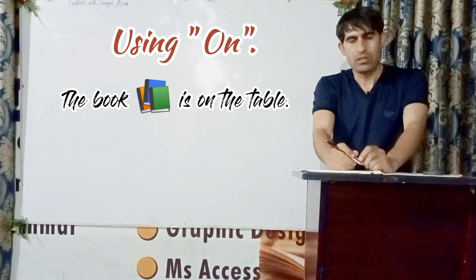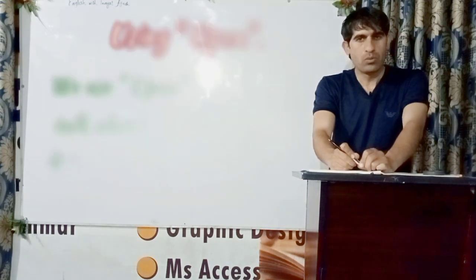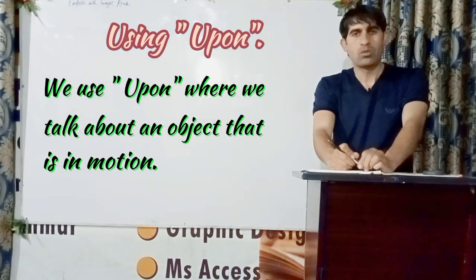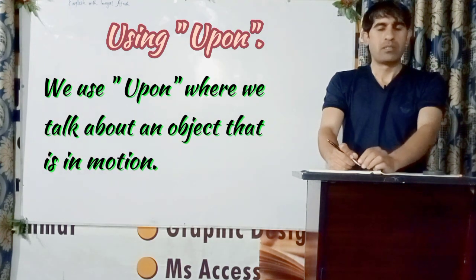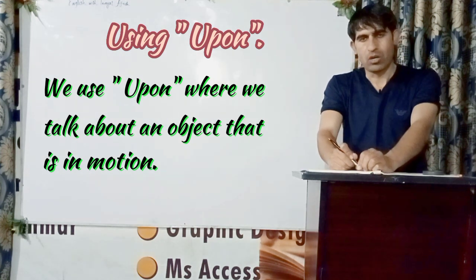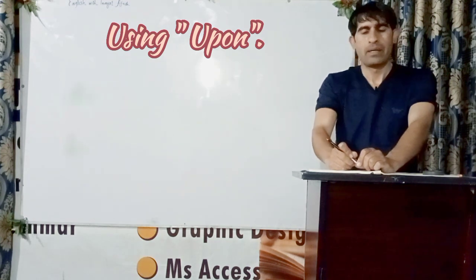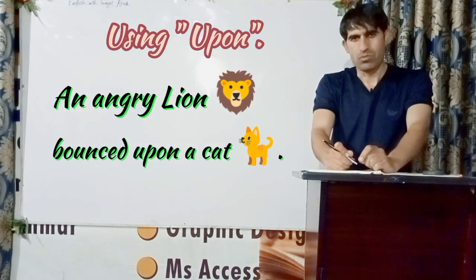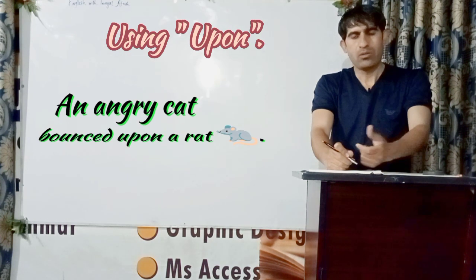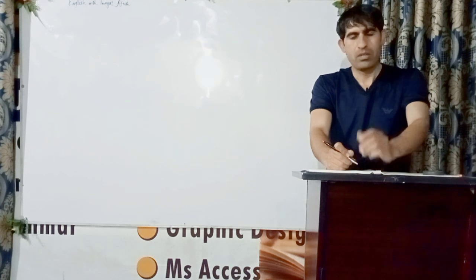The story about using 'upon' is quite different. 'Upon' is also a preposition, but it is used in a situation when we talk about an object that is in motion. For example, 'an angry lion bounced upon a cat,' or 'an angry cat bounced upon a rat.'